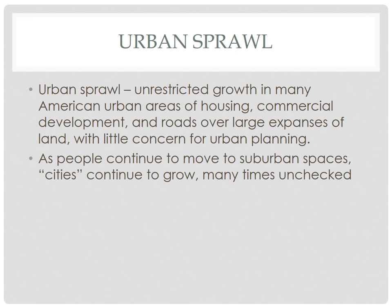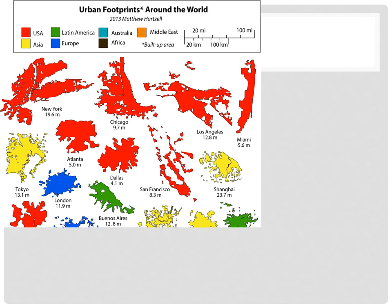For Las Vegas, loss of agricultural land is less of a concern, but Chicago is a compelling case study. Chicago is growing primarily in one direction since it borders Lake Michigan, and that expansion is cutting into prime agricultural land — a very real concern in the United States as more people want to move to the suburbs.